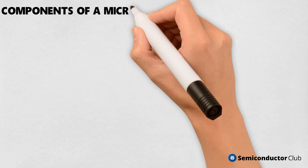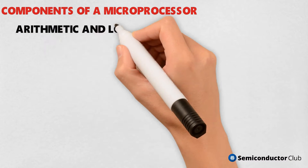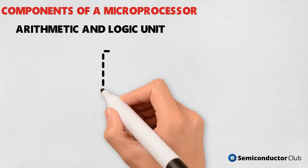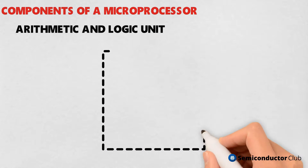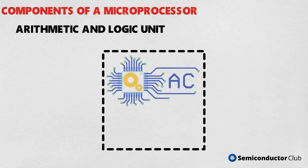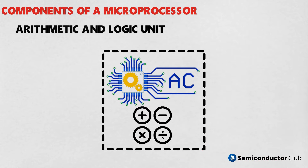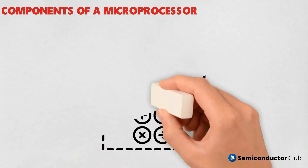Components of the microprocessor are discussed next. Arithmetic and Logic Unit: as the name suggests, it performs arithmetic and logical operations like addition, subtraction, OR, etc., on 8-bit data.